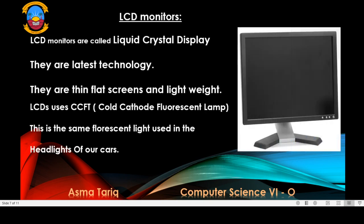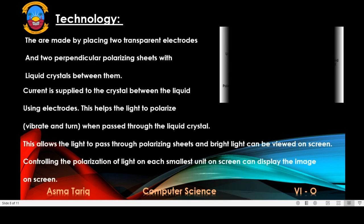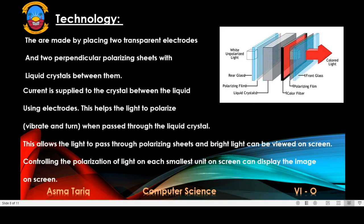Now we come to LCD monitors. LCD monitors are called Liquid Crystal Display. They are the latest technology — thin, flat screen, and lightweight. LCDs use a CCFT, Cold Cathode Fluorescent Lamp, the same type of fluorescent light used in the headlights of cars. They are made by placing two transparent electrodes and two perpendicular polarizing sheets with liquid crystal between them.